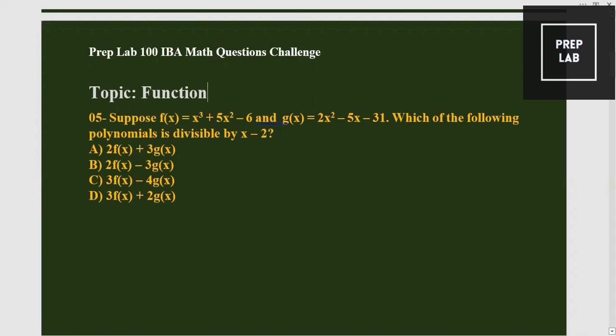remainder will be zero. So what we have to do: we know that if it is divided by x - 2, we will write down x - 2 = 0, so x = 2.